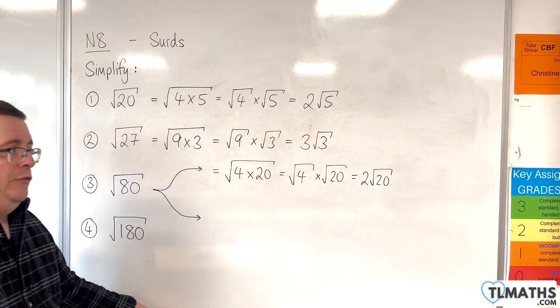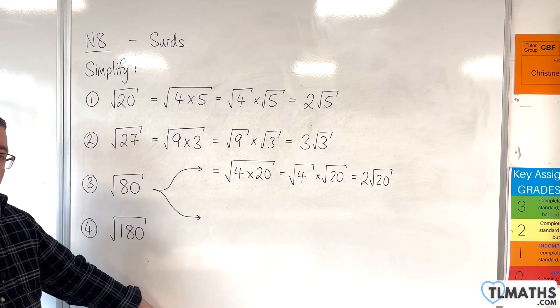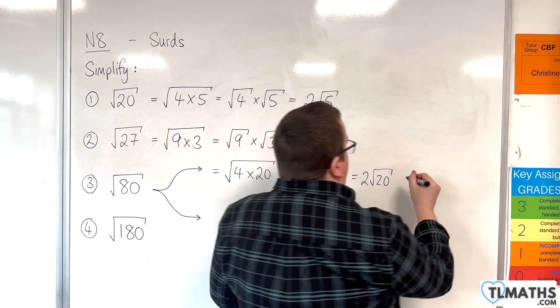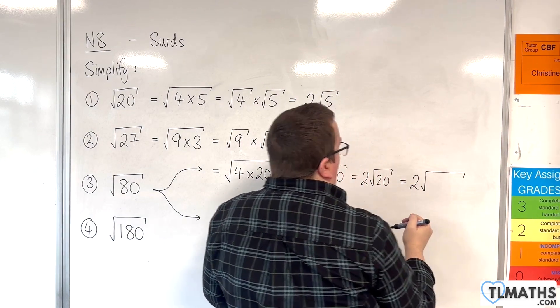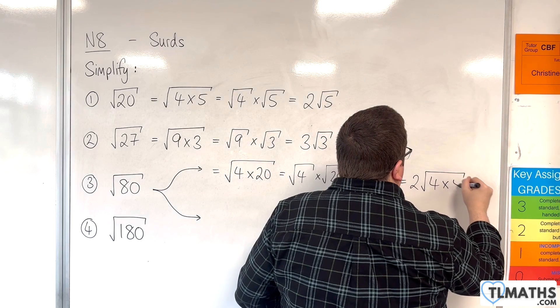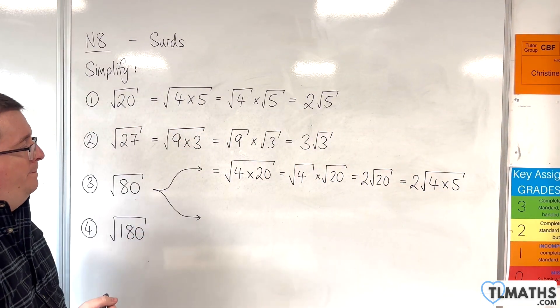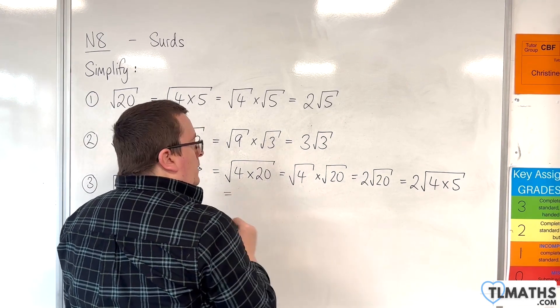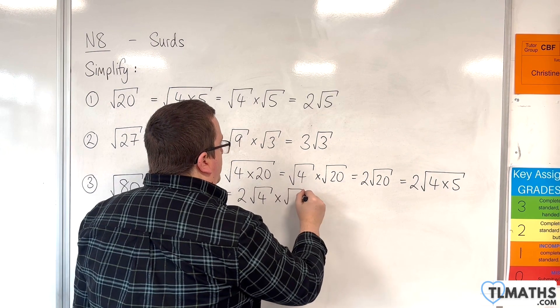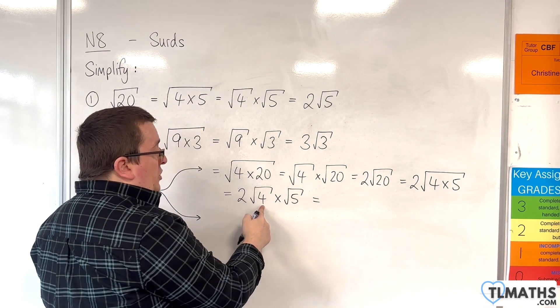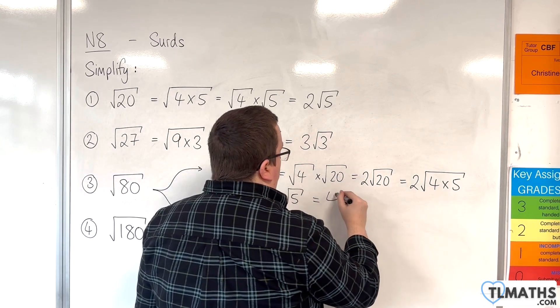But root 20 can itself be simplified because 4 goes into 20. So we can write this as 2 times the square root of 4 times the square root of 5. So it's the example we had up here. We have 2 times the square root of 4 times the square root of 5. Square root of 4 is just 2, so that's 2 times 2 times root 5, which is just 4 root 5.